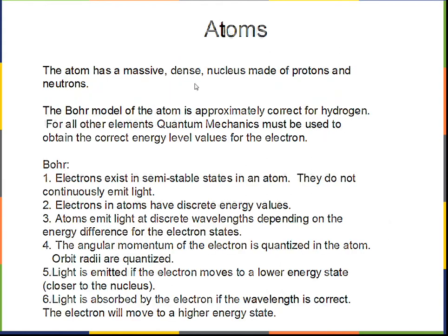So, atoms: what we learned about the atoms. Rutherford has let us know that we have a massive dense nucleus with protons. Later, the neutron was analyzed and found to be in the nucleus. The Bohr model is approximately correct for hydrogen but not for any other element in the periodic table. Really, to get the best result even for hydrogen, we have to use quantum mechanics to get the correct energy values for the electron.